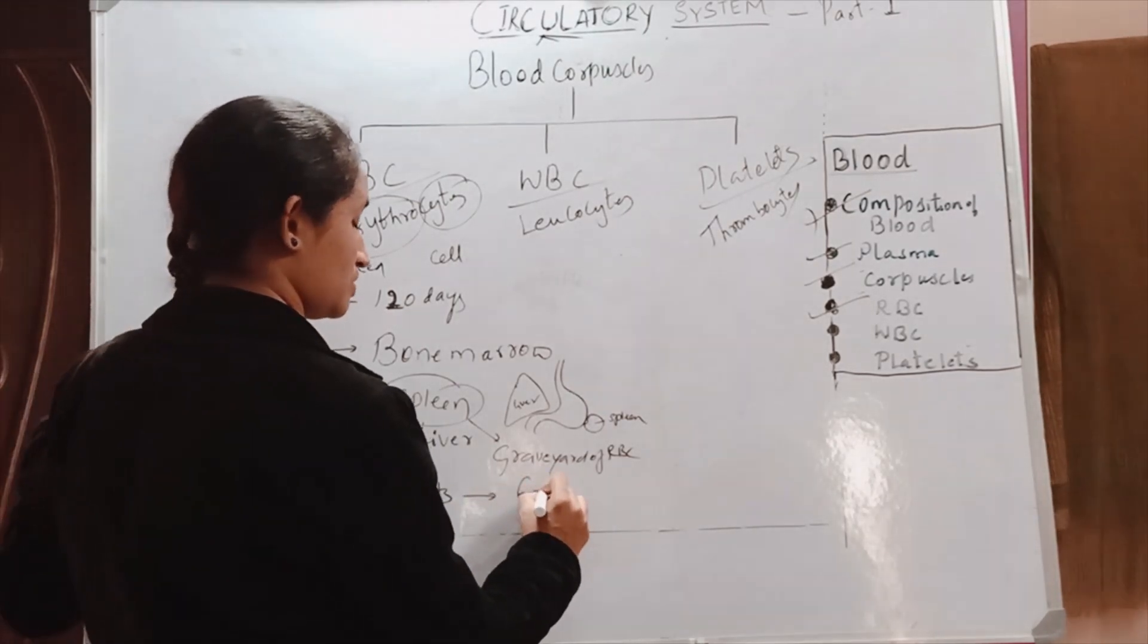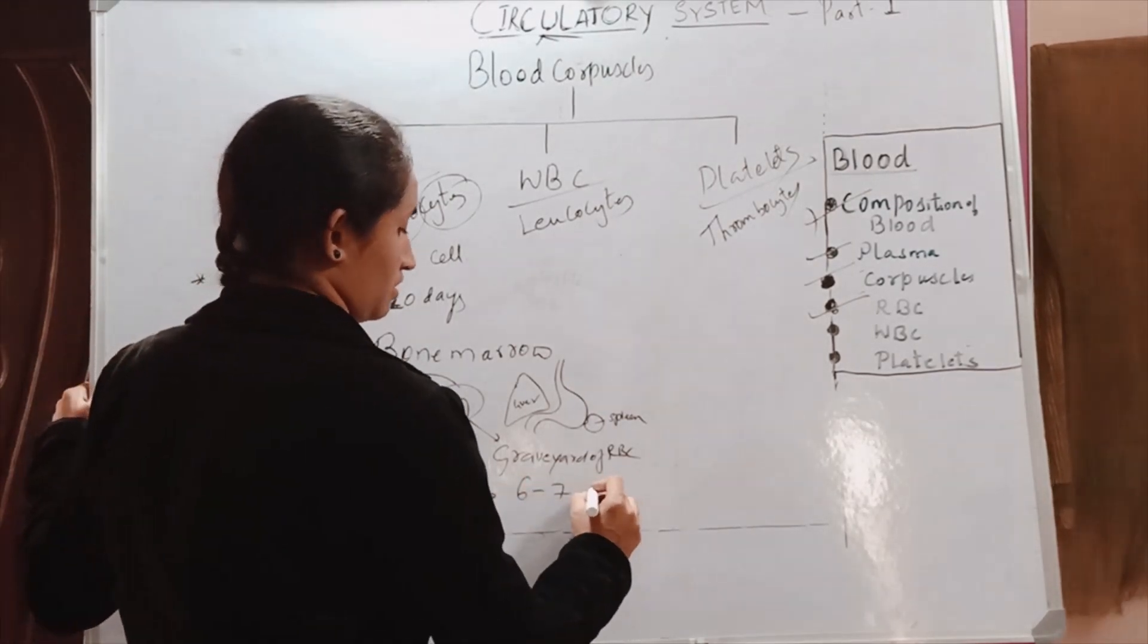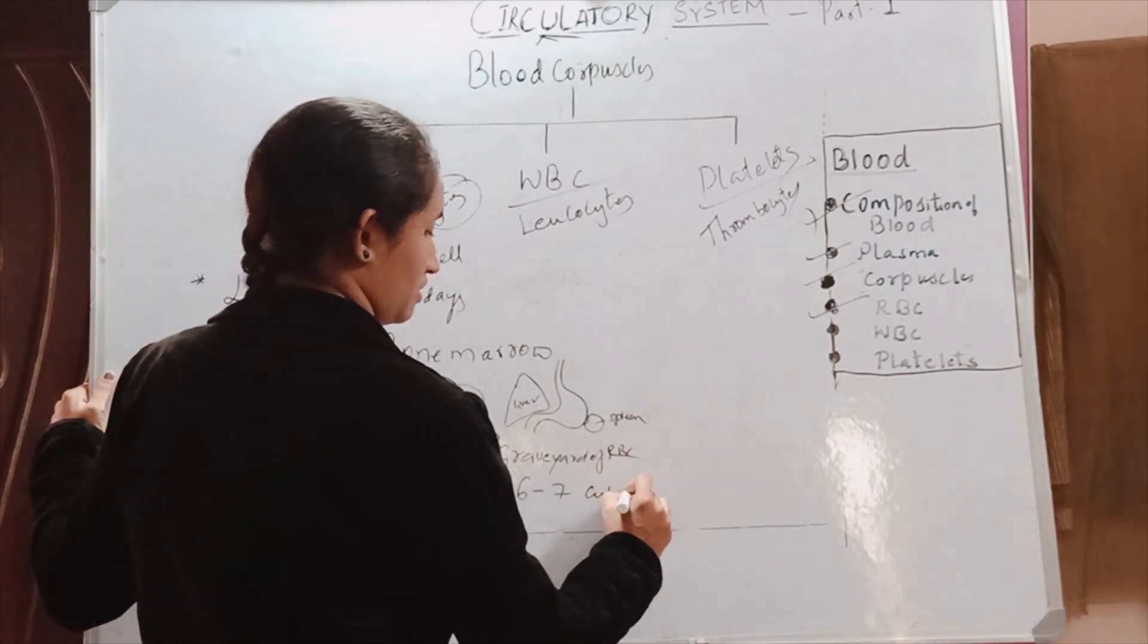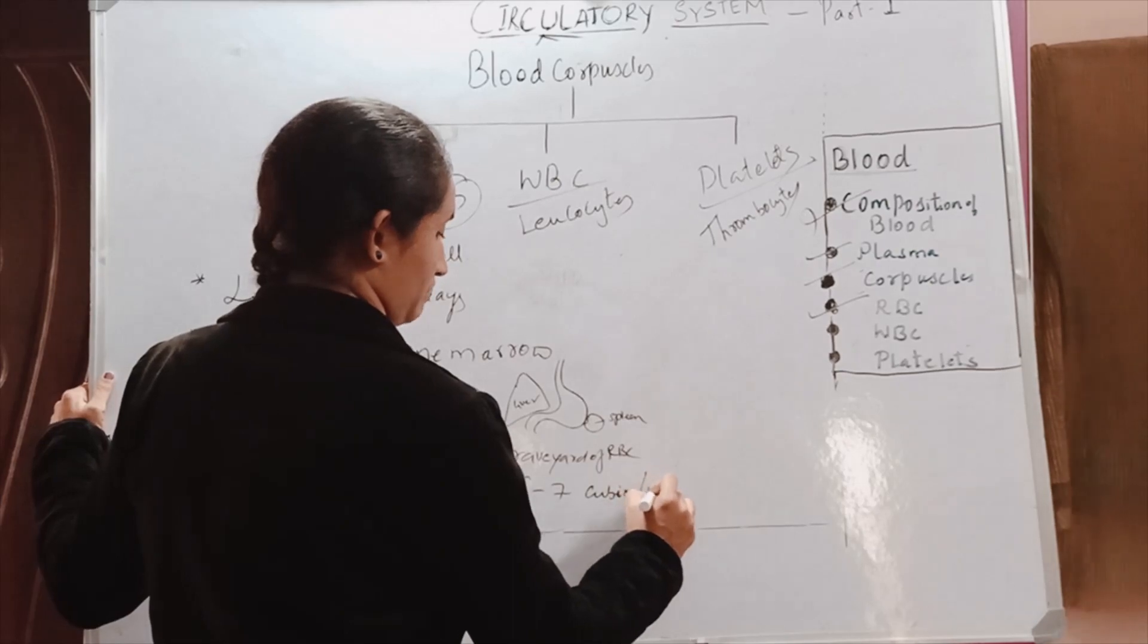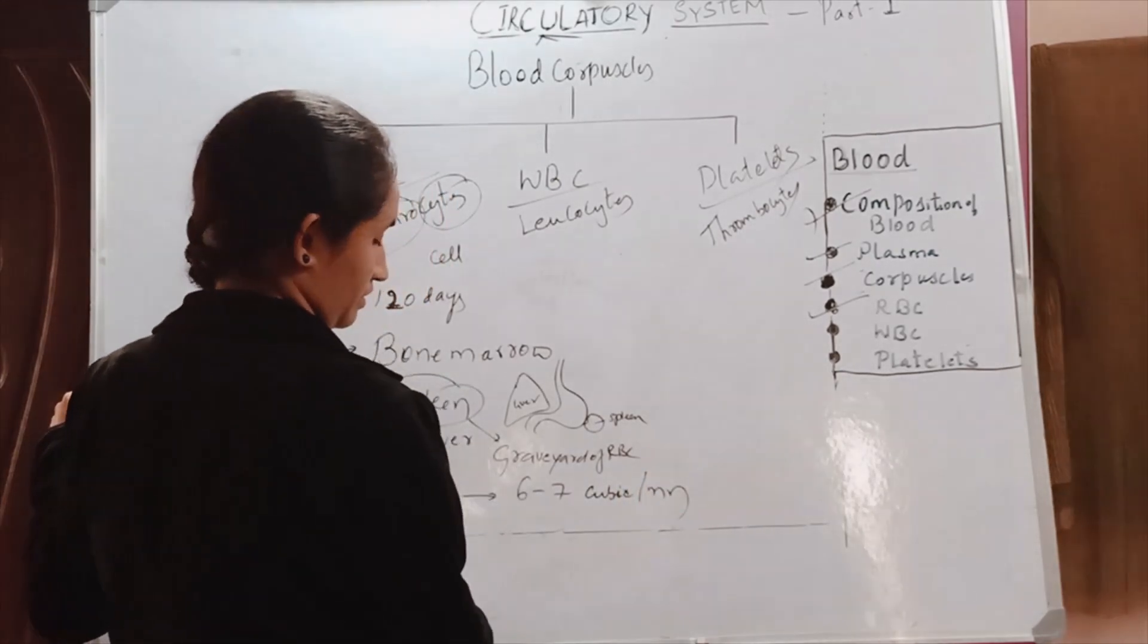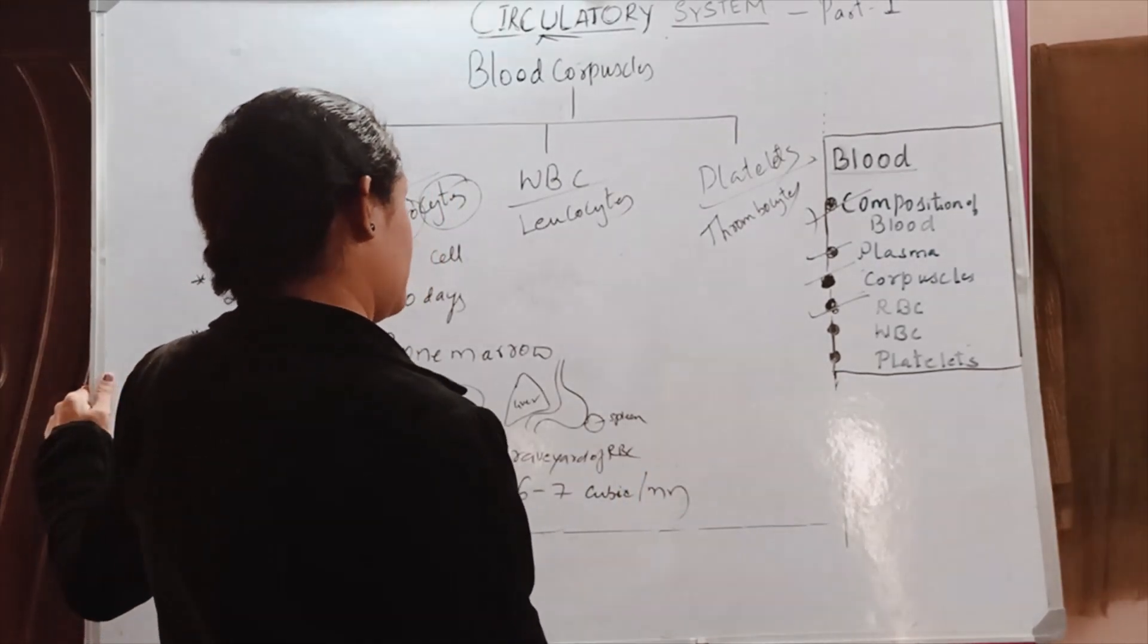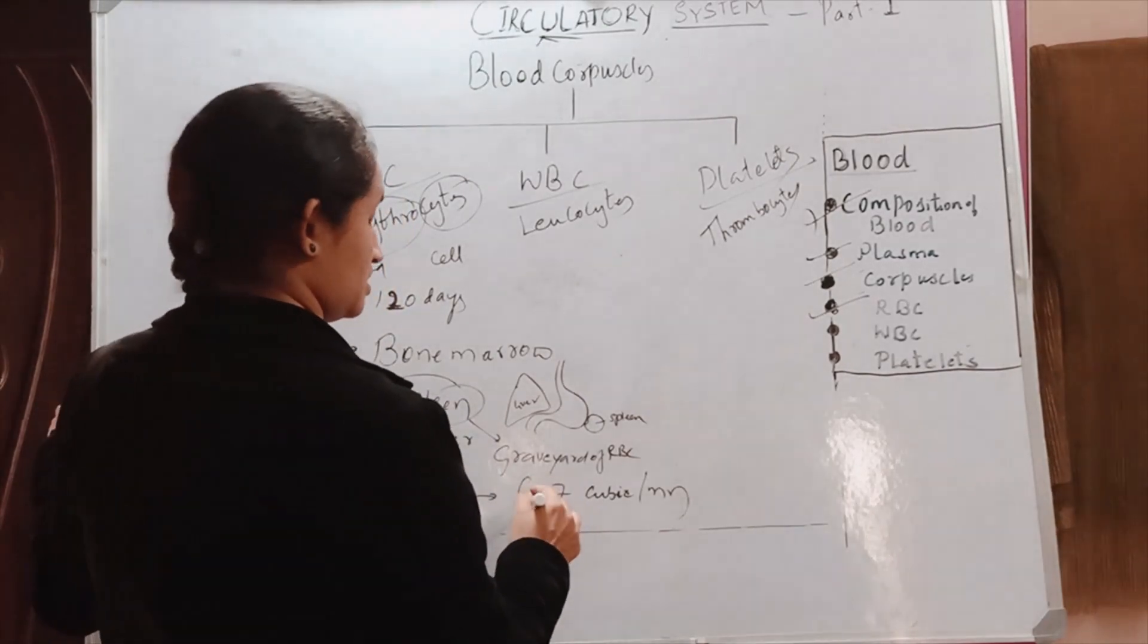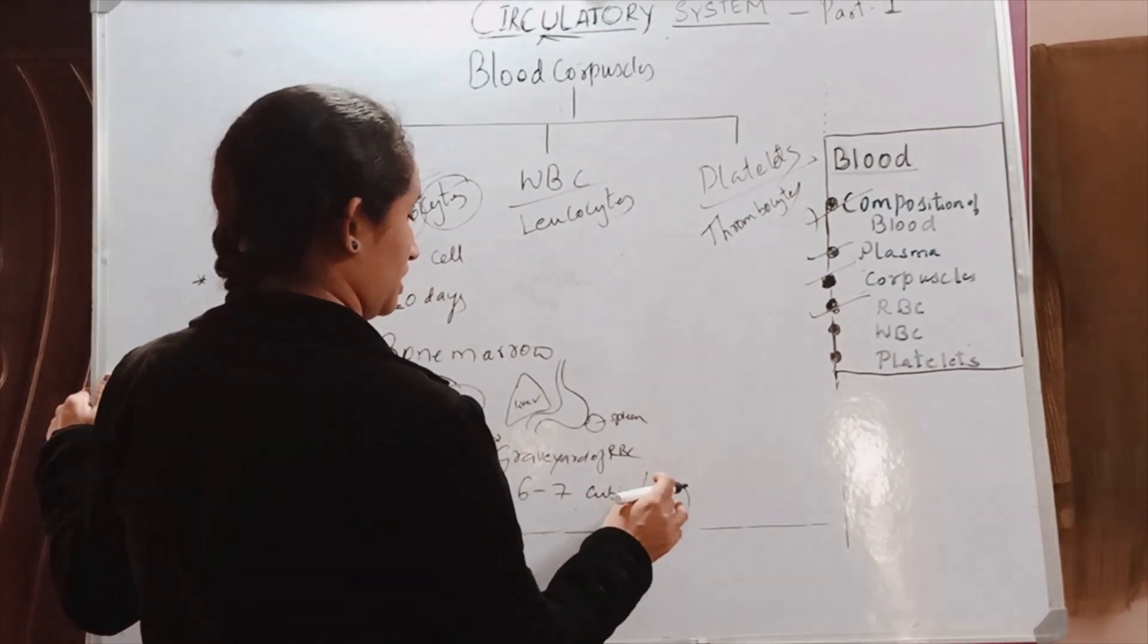We will find 6 to 7 million per cubic millimeter. In infants we can find 6 to 7 million per cubic millimeter.